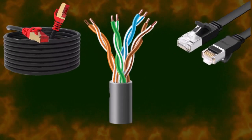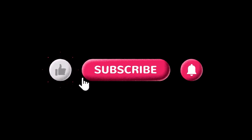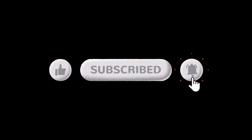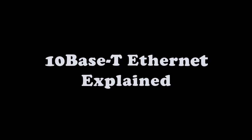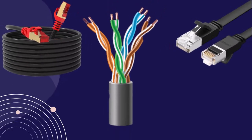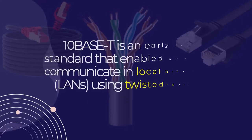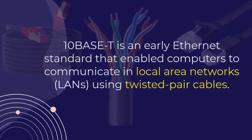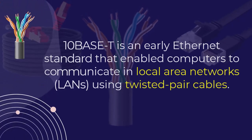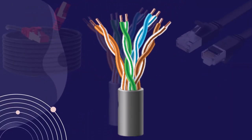This video explains 10BASE-T for beginners. 10BASE-T is an early Ethernet standard that enables computers to communicate in local area networks (LANs) using twisted pair cables. Here's a breakdown of its history, how it works, and its relevance today.